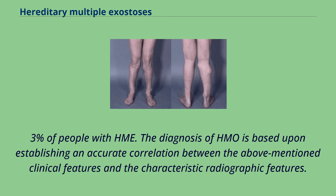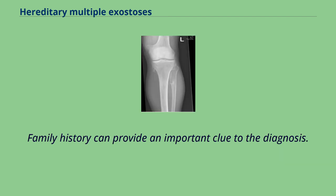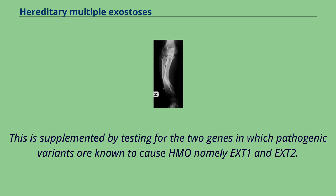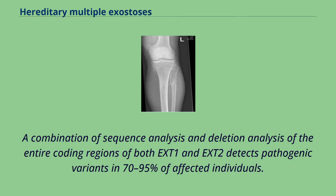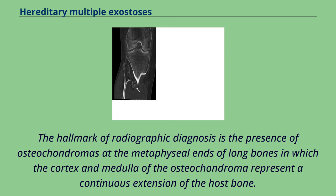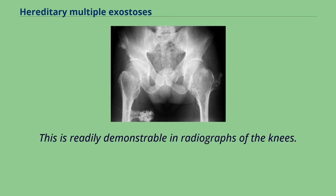The diagnosis of HMO is based upon establishing an accurate correlation between the clinical features and characteristic radiographic features. Family history can provide an important clue to the diagnosis. This is supplemented by testing for the two genes in which pathogenic variants are known to cause HMO, namely EXT1 and EXT2. A combination of sequence analysis and deletion analysis of the entire coding regions of both genes detects pathogenic variants in 70–95% of affected individuals. The hallmark of radiographic diagnosis is the presence of osteochondromas at the metaphyseal ends of long bones, in which the cortex and medulla represent a continuous extension of the host bone, readily demonstrable in radiographs of the knees.